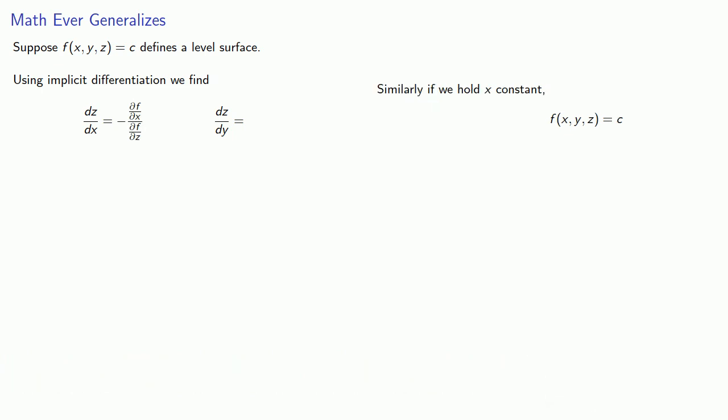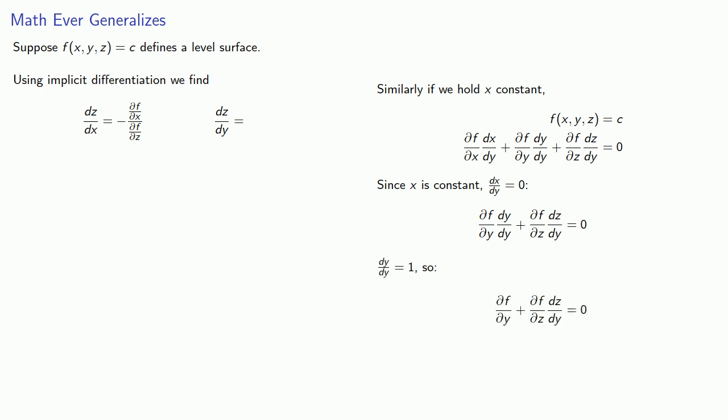Similarly, if we hold x constant, we can use implicit differentiation to solve for dz/dy. So our first step: since x is constant, dx/dy is equal to zero, dy/dy is equal to one, and so we find.